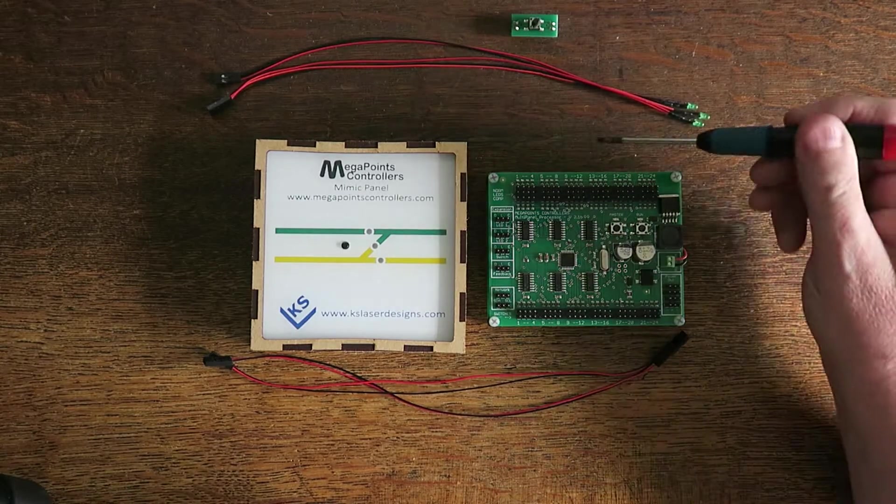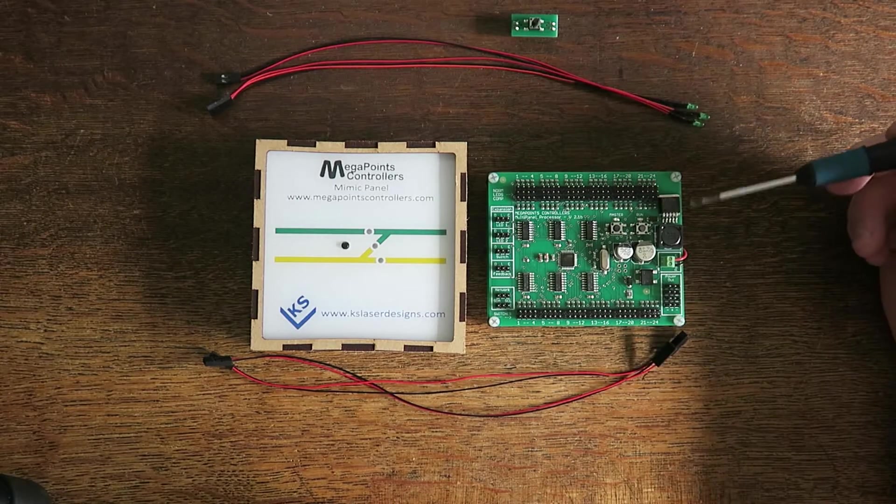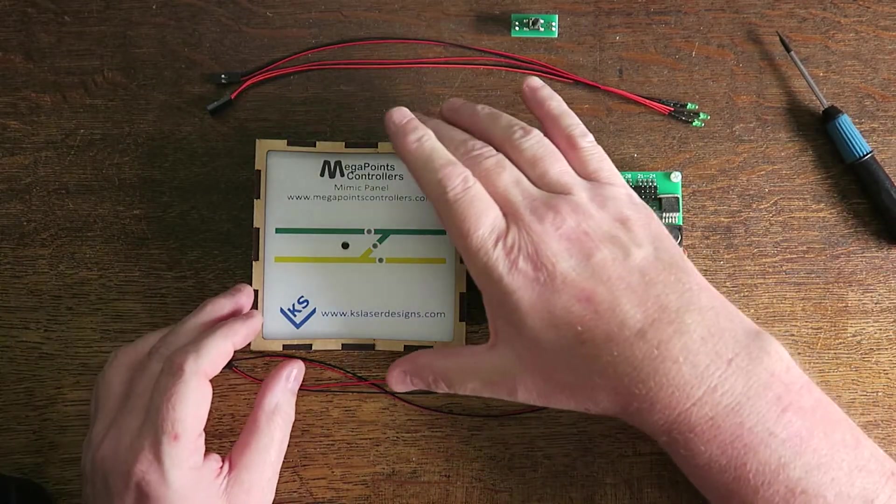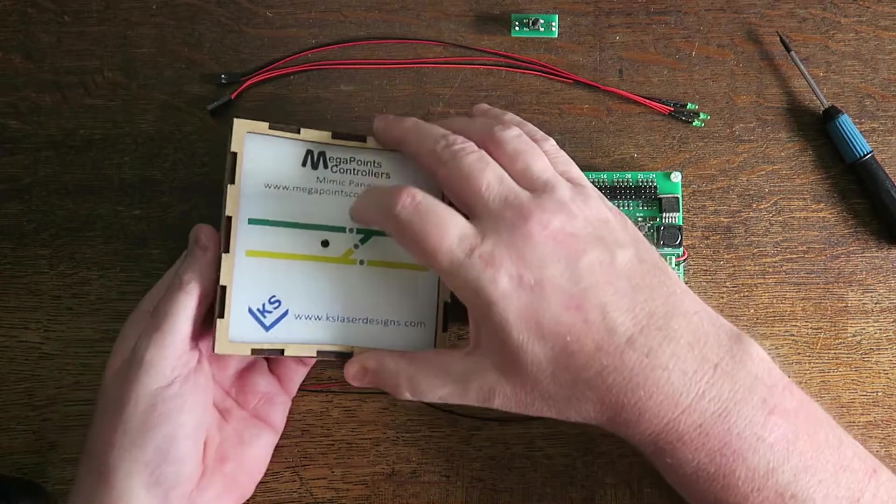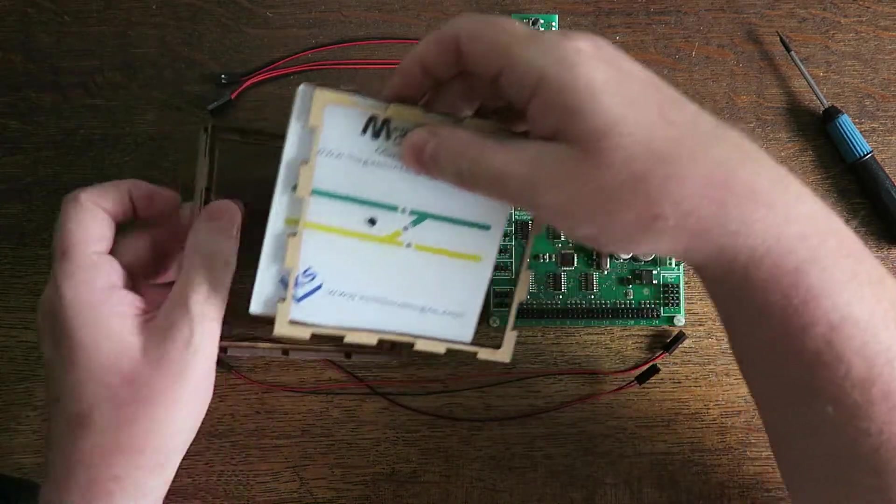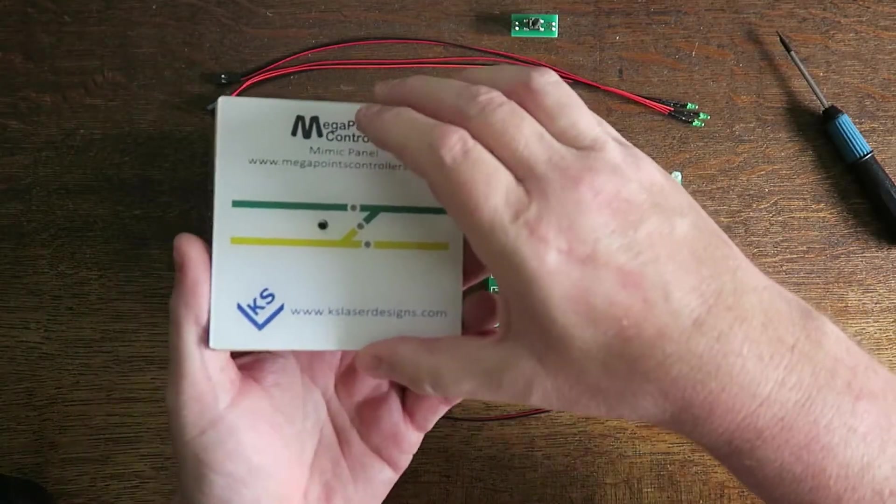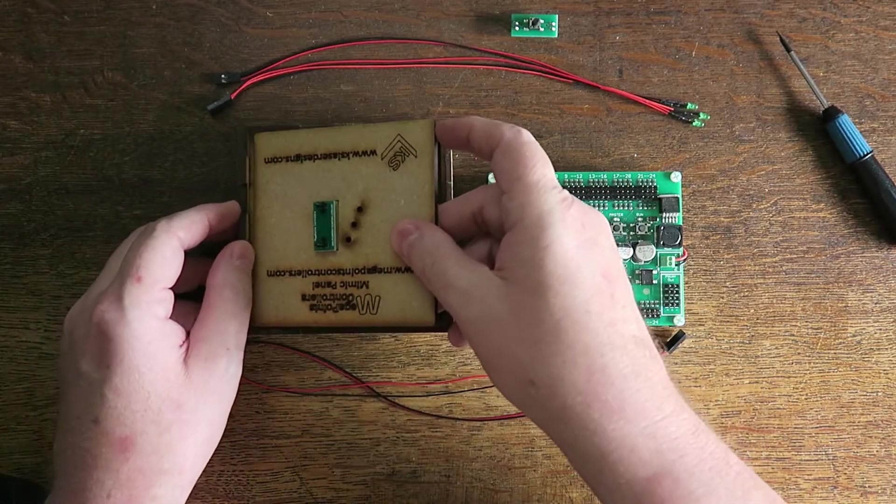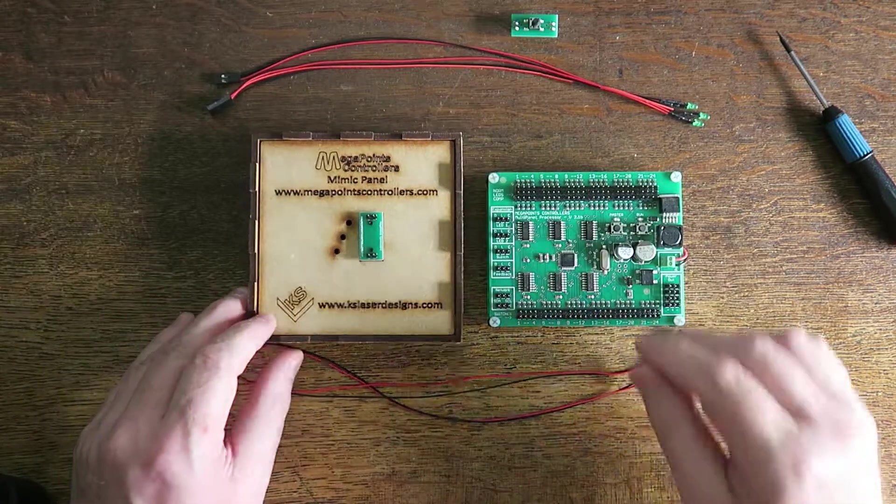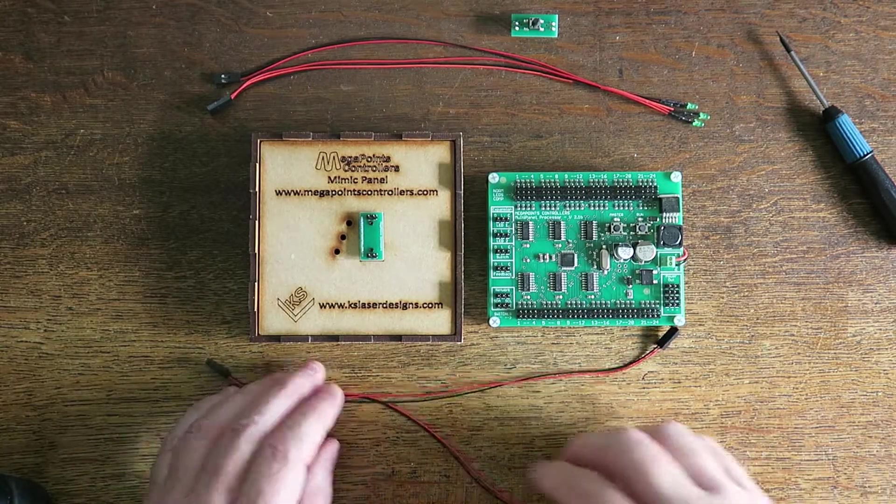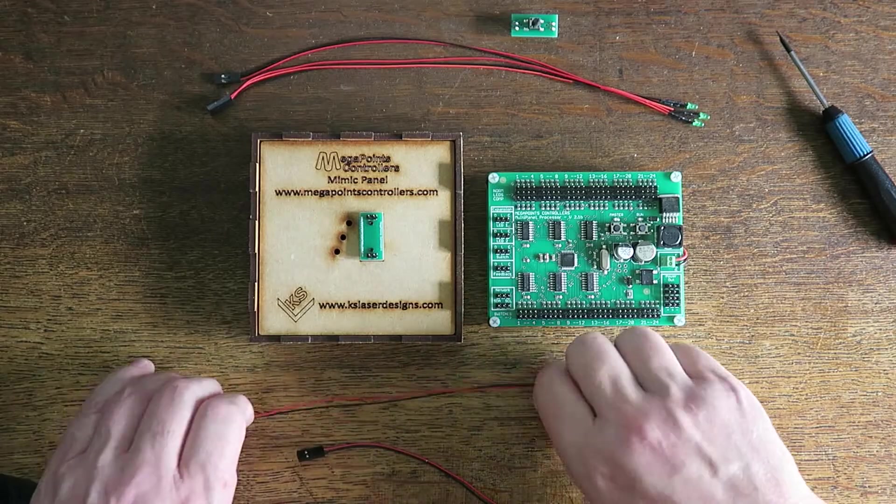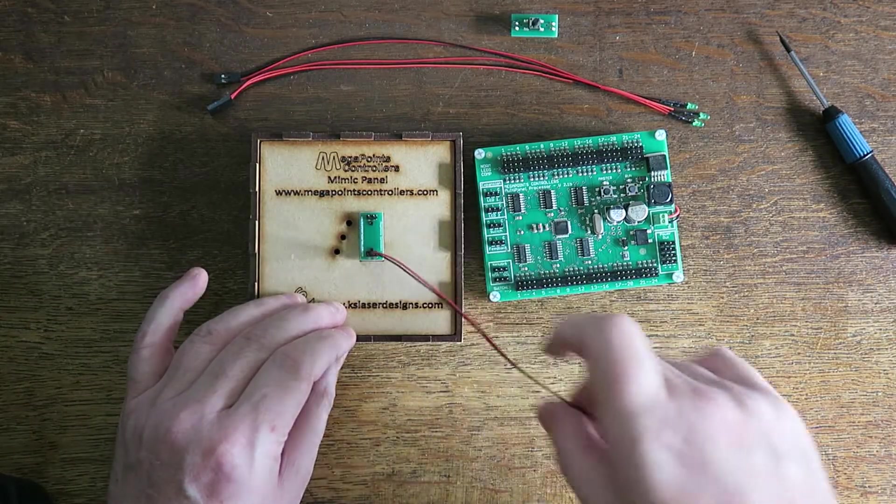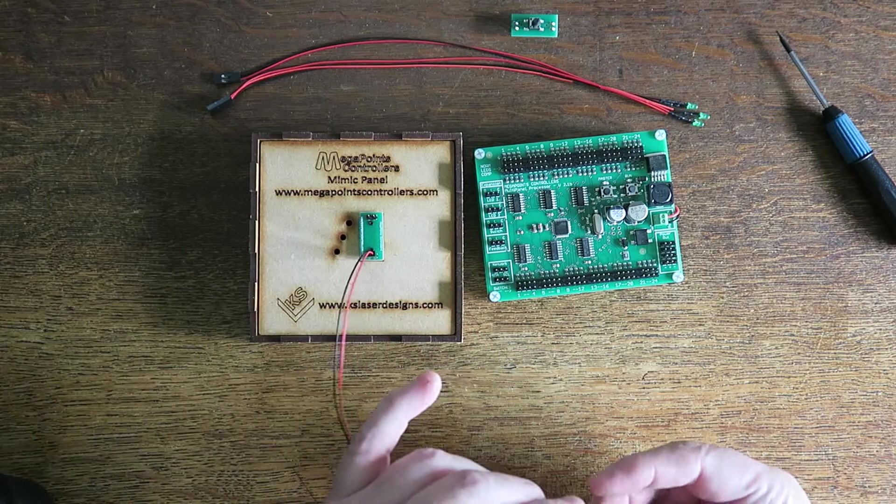So what I'm going to do for this is I have a multi-panel 2.1. This is the same scenario though on all multi-panel versions and I've got a mimic panel here. So if I split this down, I have a button already attached. I'm using plug and play components because it's so much easier to demonstrate. So what I'll do, I'll take one of the cables and connect it to a button.